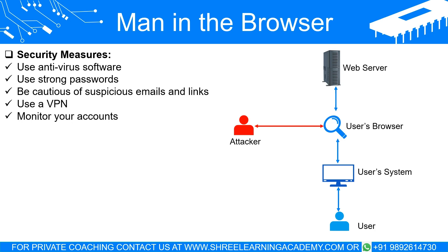Use a VPN: consider using a virtual private network (VPN) when connecting to the internet, as this can provide an additional layer of security by encrypting your online activity. Monitor your accounts: regularly check your online accounts and financial statements for any suspicious activity, and report any unauthorized transactions or activity to your bank or financial institution immediately.